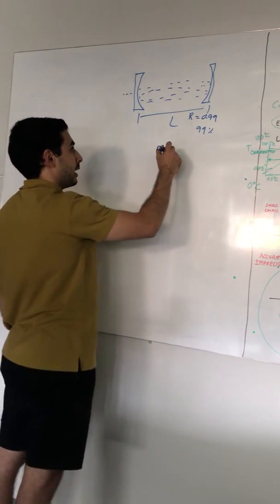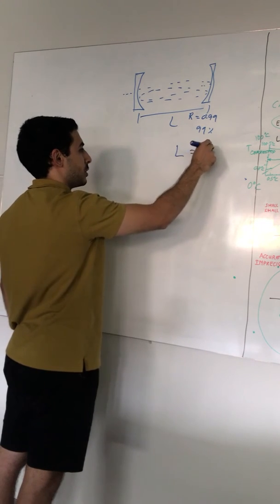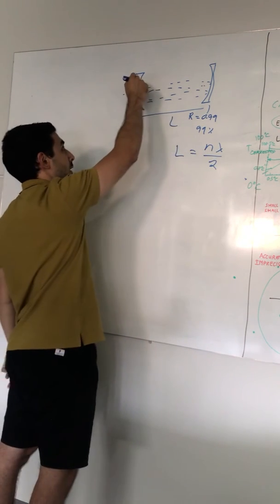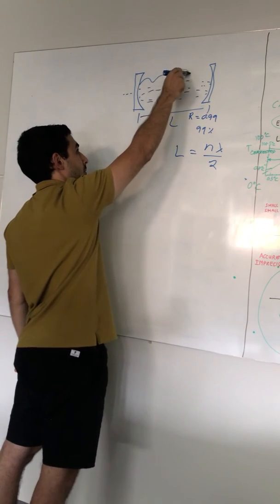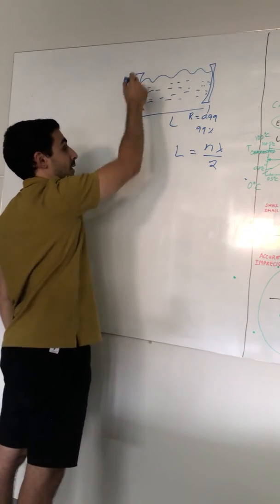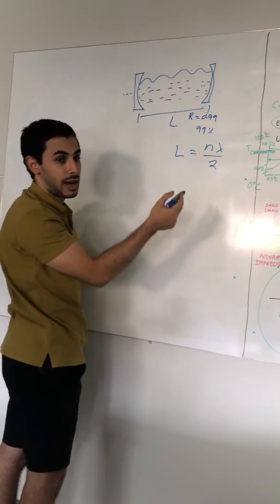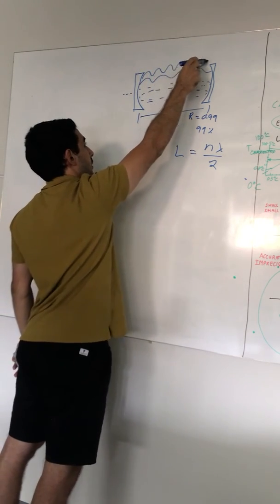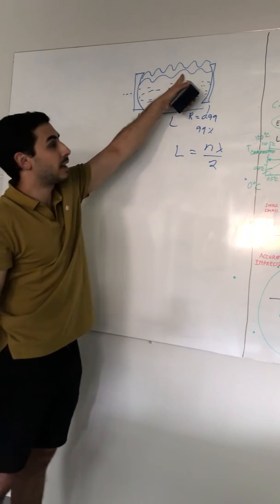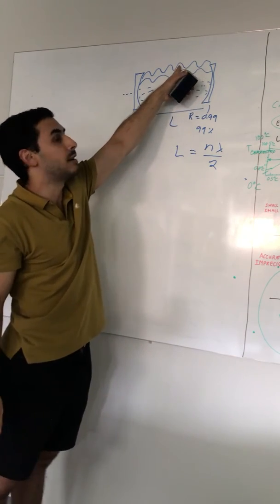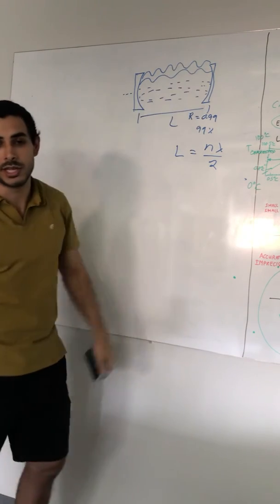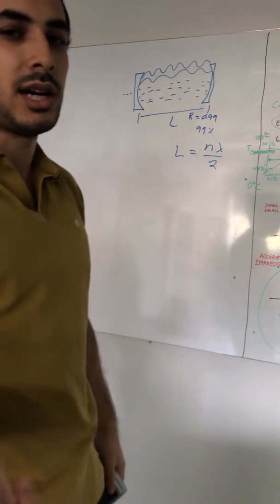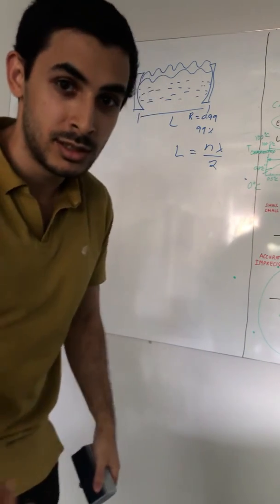You know about interference — if the cavity length L equals an integer number of half-wavelengths, you get a standing wave. You can also get standing waves of higher order. This is a longer wavelength, lower frequency; this is a shorter wavelength, higher frequency. So that's what we're dealing with today — that's an optical cavity.